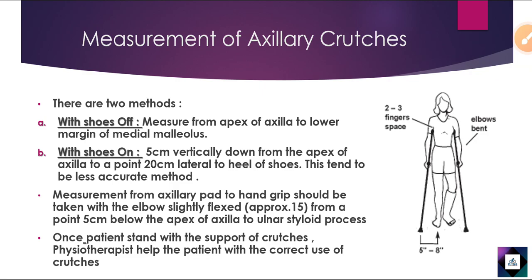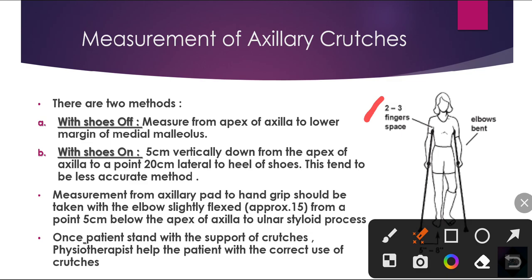With shoes on: measure 5 cm vertically down from the apex of the axilla, and 20 cm lateral to the heel of the shoes. This method is less accurate. In the diagram, there should be 2 to 3 finger spaces. The elbow should be slightly flexed, and from the axillary pad to the hand grip is the length of the crutch.